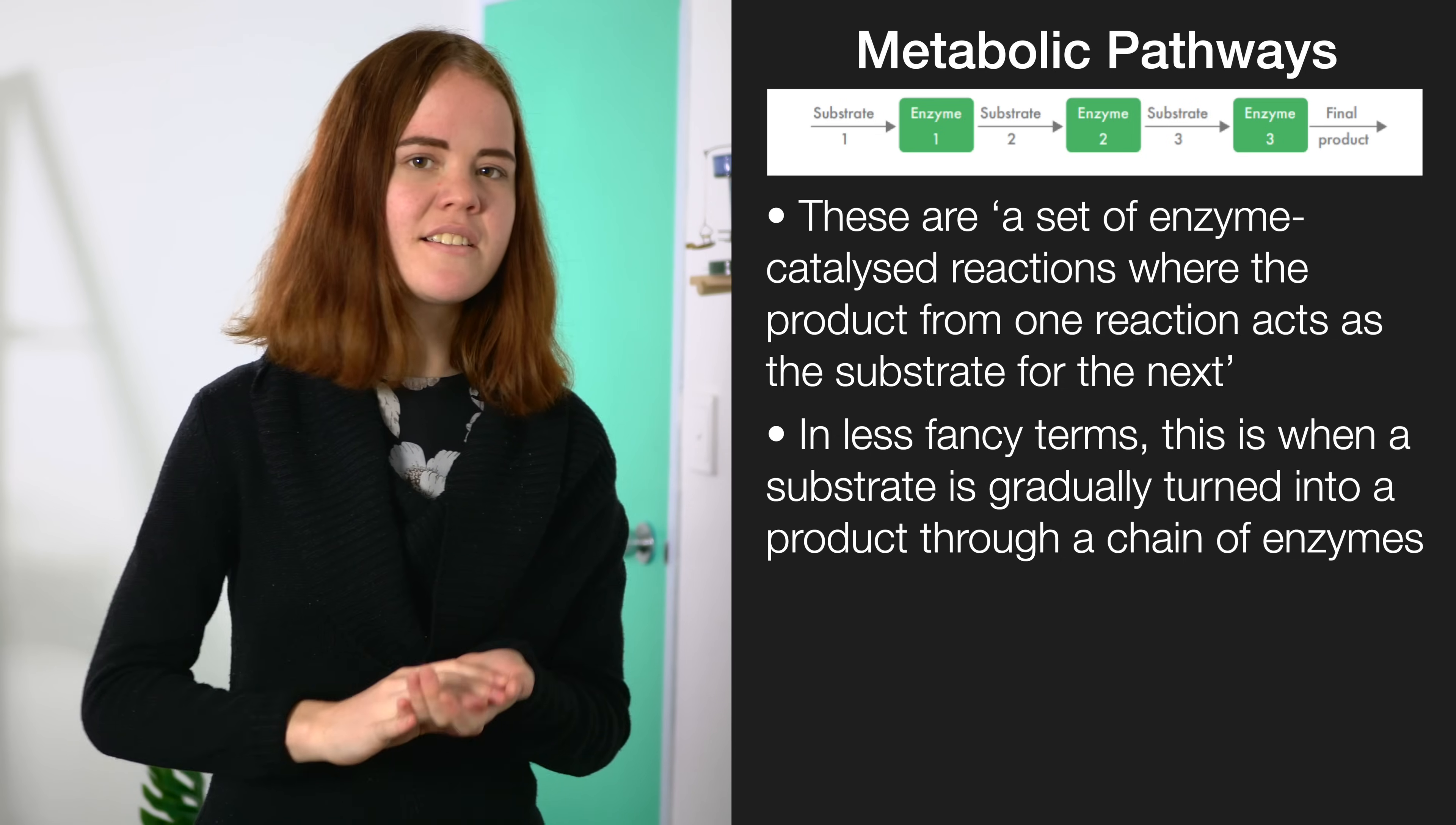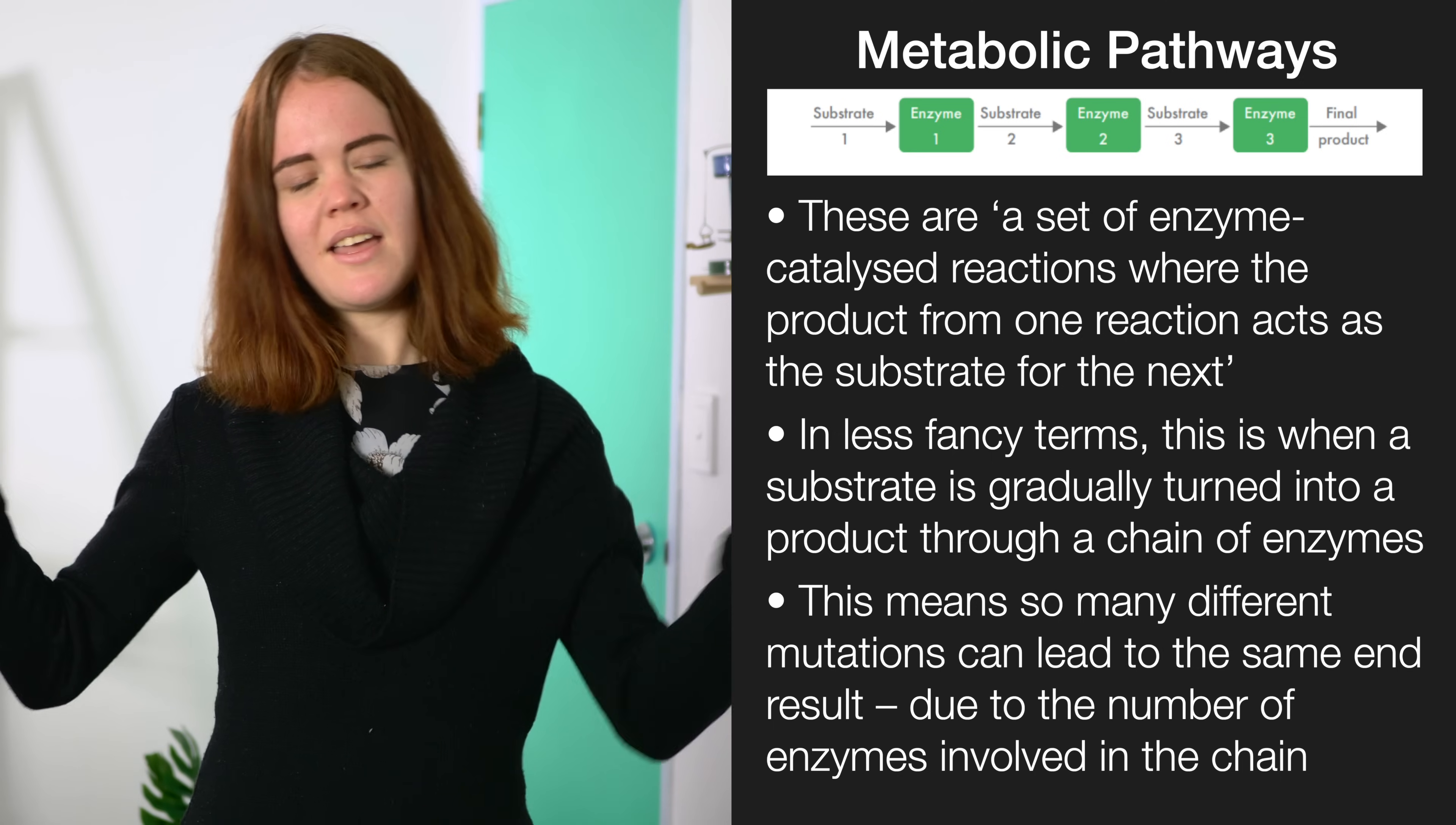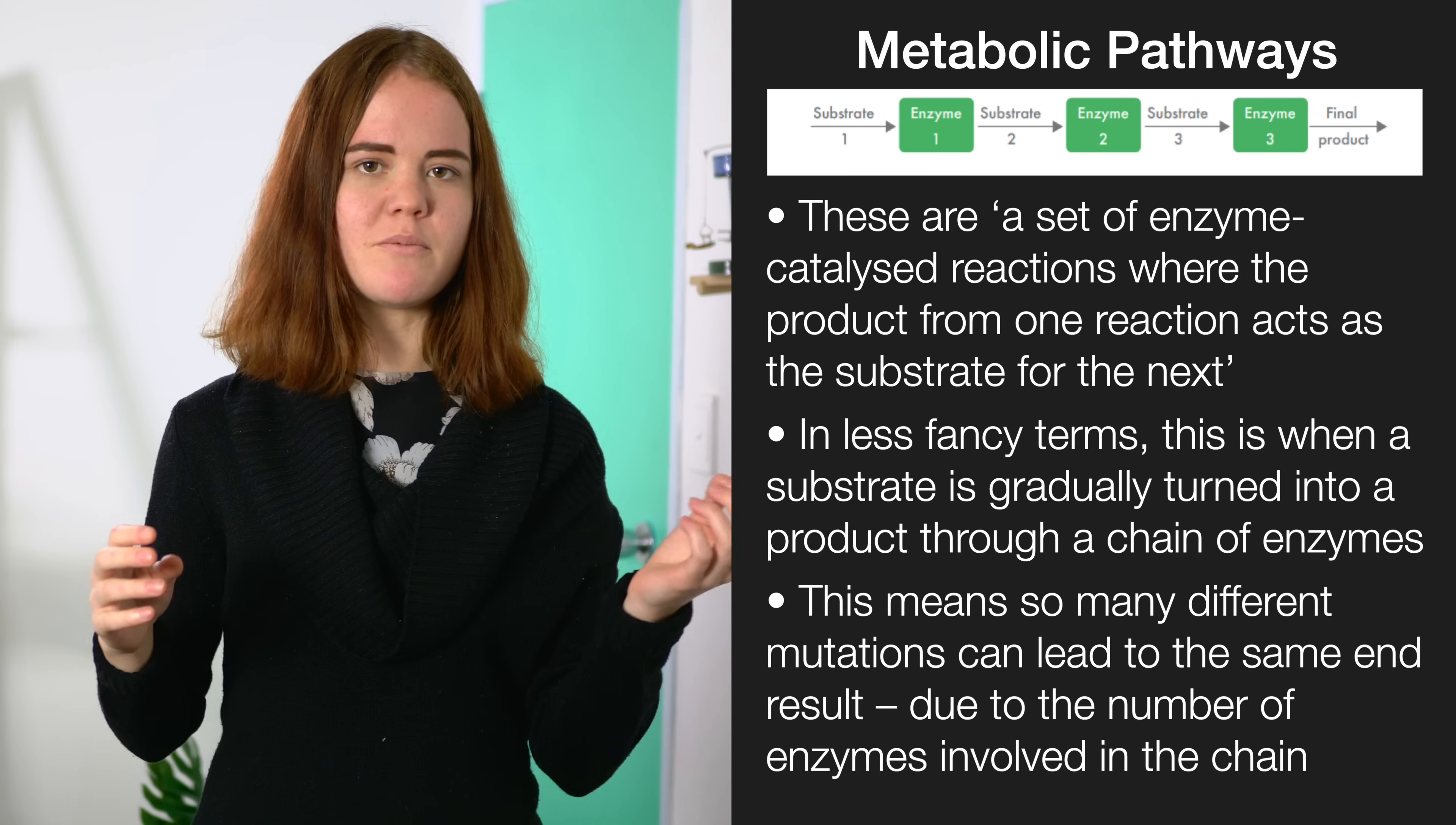What this means is that there are several different mutations that can lead to the same end result, because there's so many enzymes involved in a metabolic pathway and each one of them is necessary for the entire chain to work. Any one of them breaks if there's a mutation in the gene that codes for any of those enzymes, the entire pathway will stop working, and basically the products will just pile up before that broken enzyme so you'll never get the end product. This is actually kind of how scientists figured out that one gene codes for one protein, by seeing that these different mutations, although they led to the same result, would lead to a buildup of different products.